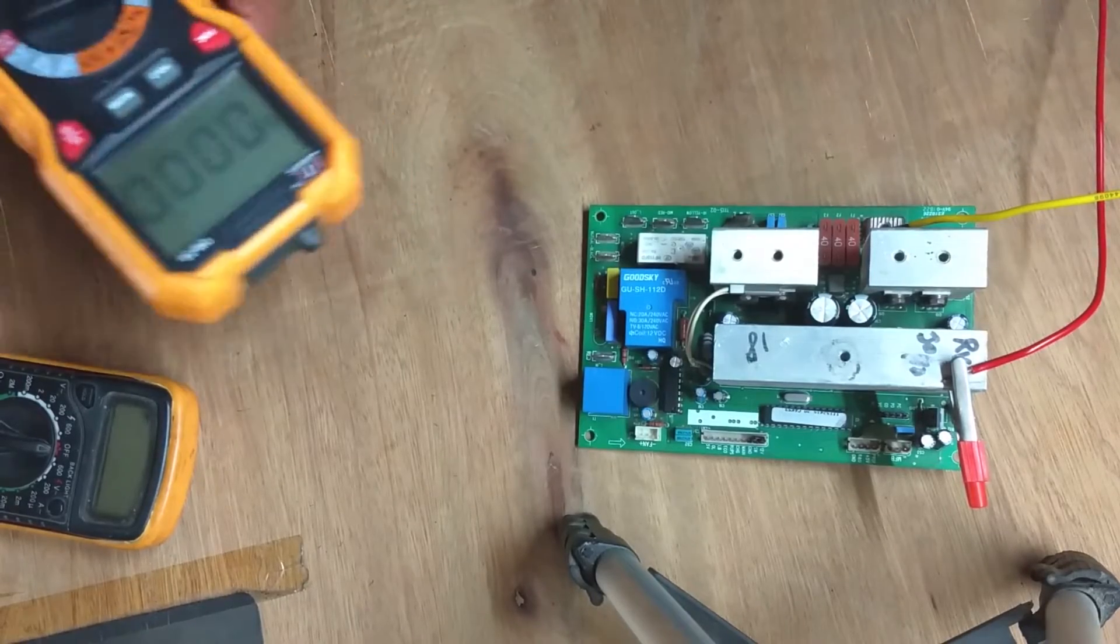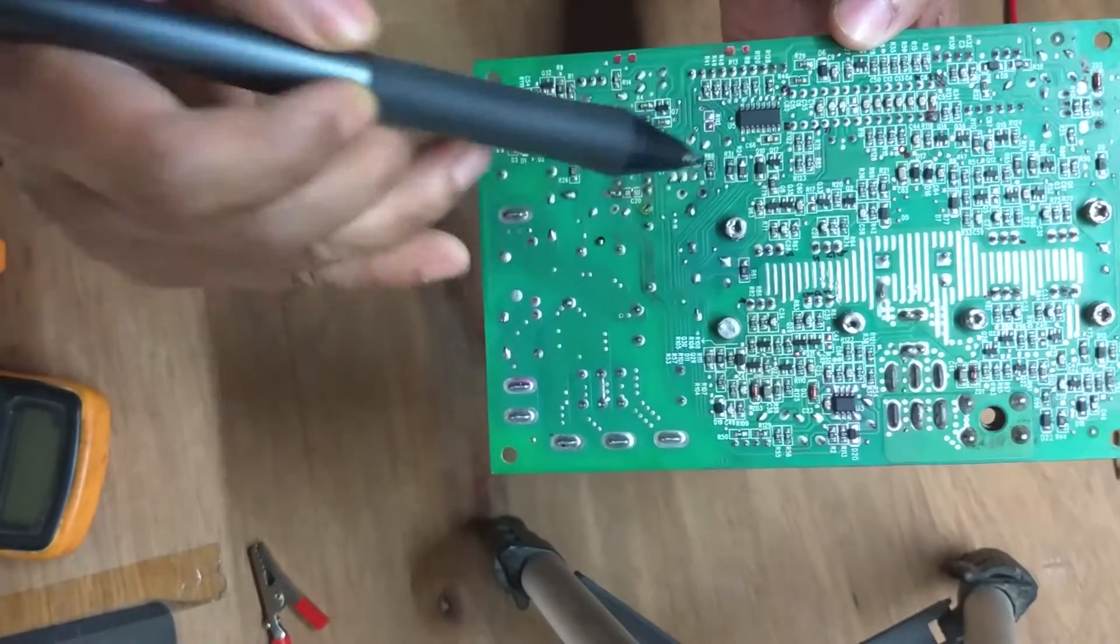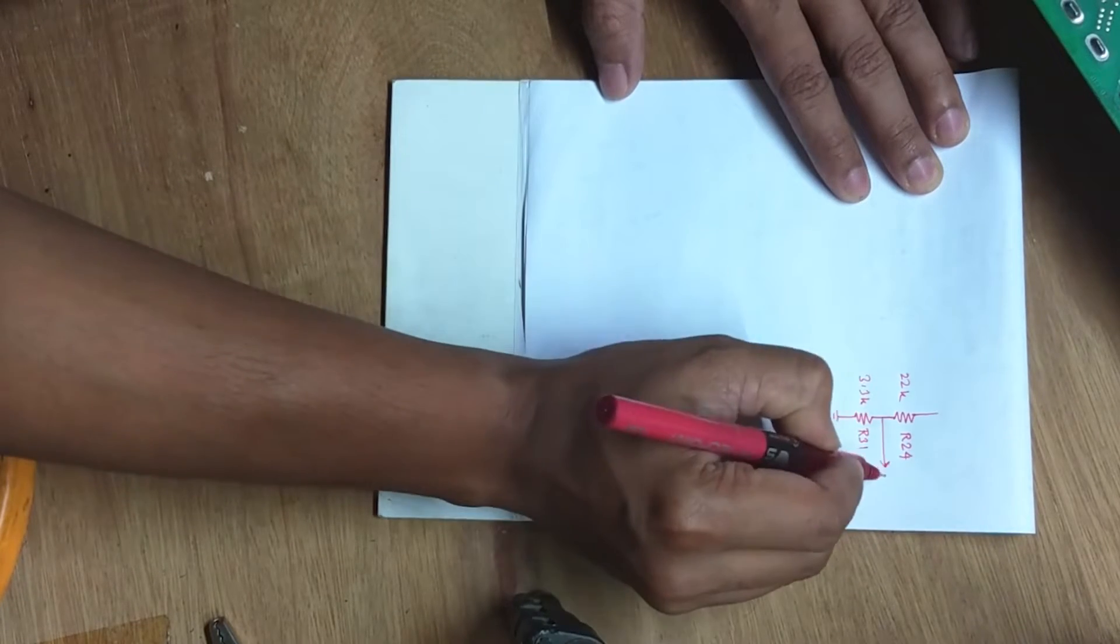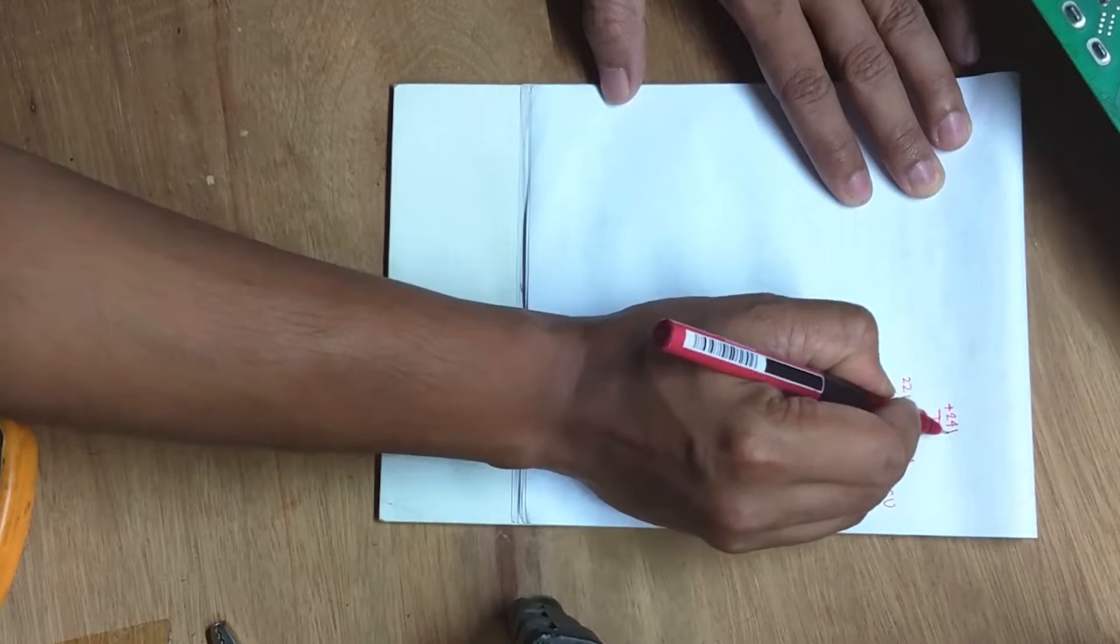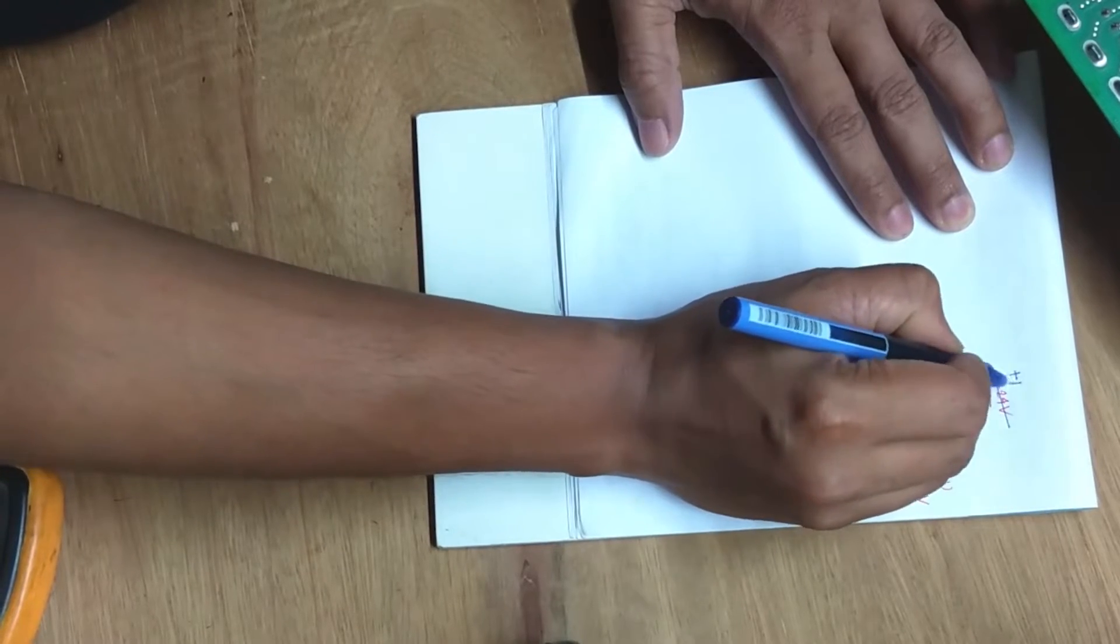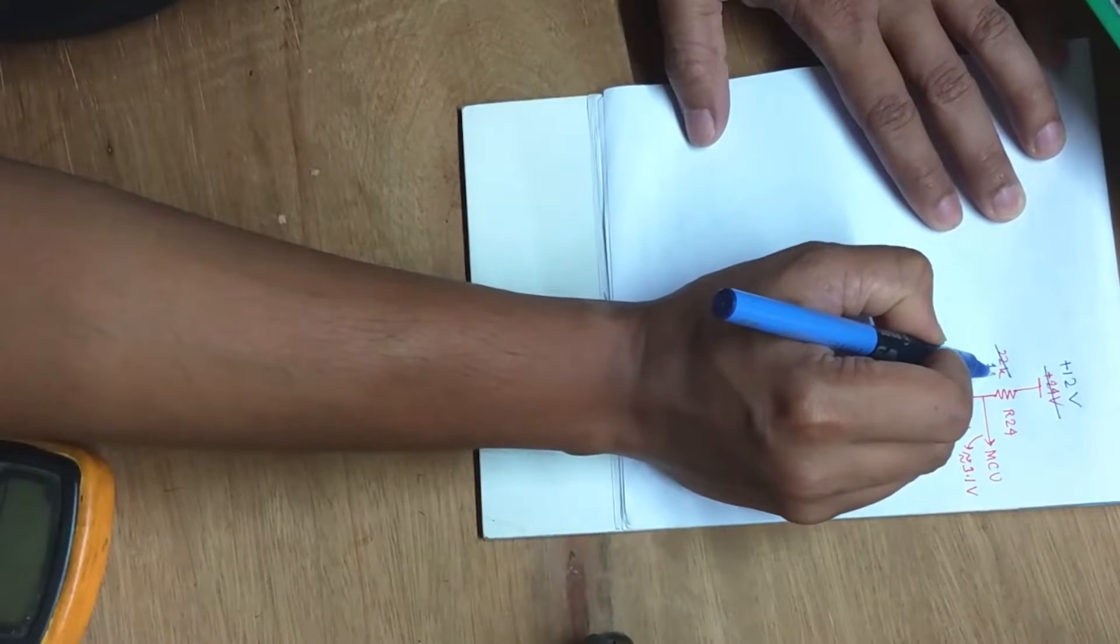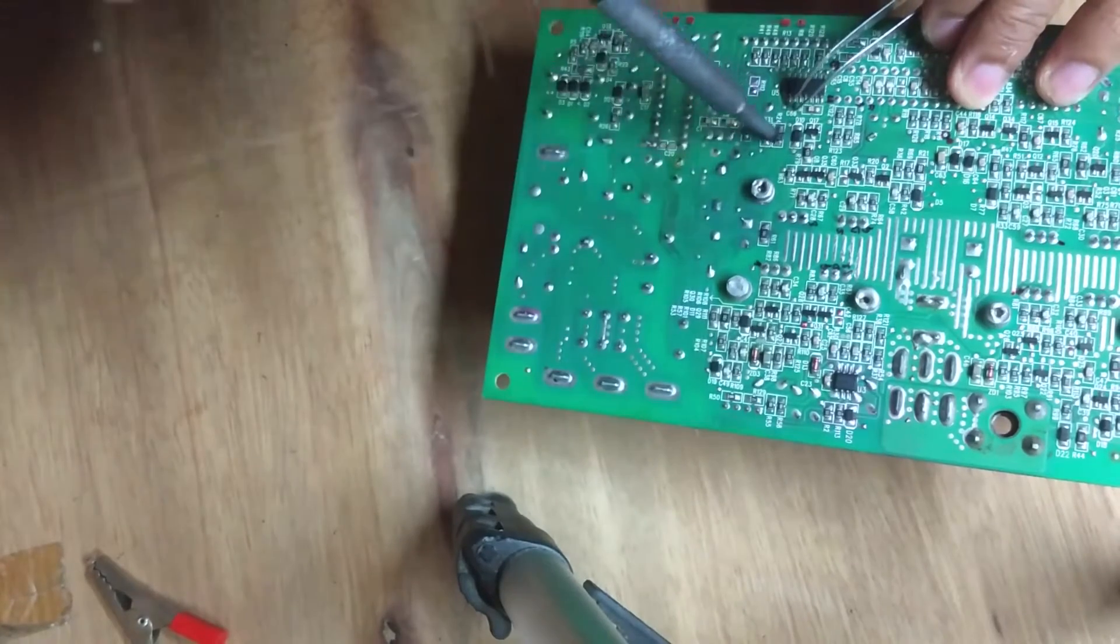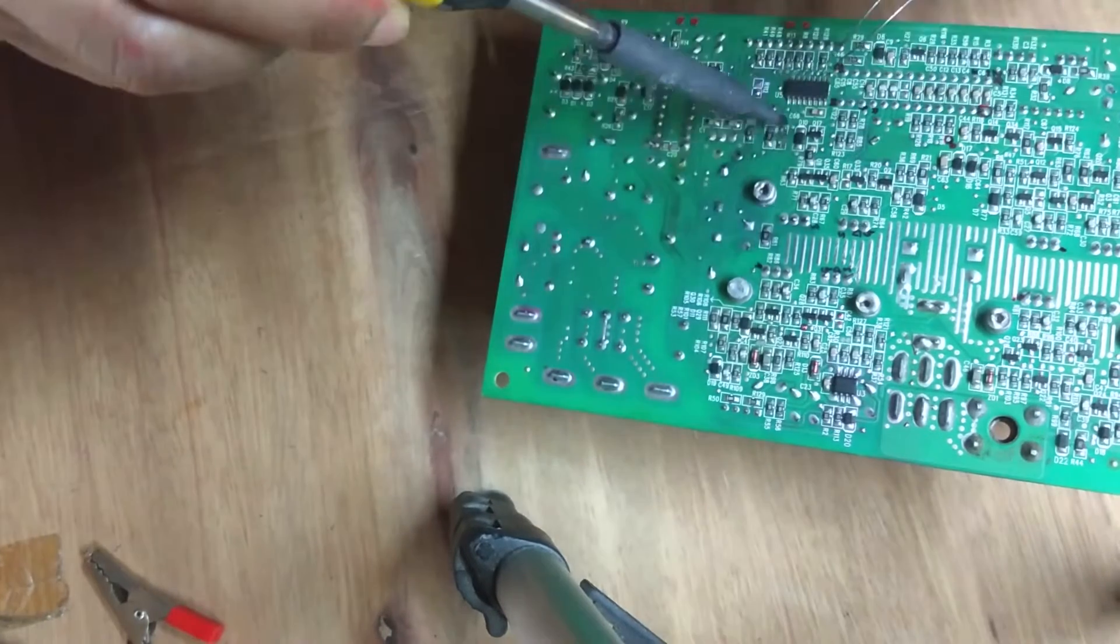Here is the voltage divider sensing the battery voltage, made up of this R24 and R31. They are connected in series like this, and this is going to the microcontroller. Here is the 24 volt input. With this network, the voltage here should be approximately 3.1 volt. Since I want to run it at 12 volt instead of 24 volt, so if I replace this R24 with 10 kilo ohm, then the voltage here will be around 3 volt. I hope this will run the system. I am first desoldering R24, cleaning the pads a little bit, just a tiny amount of flux.